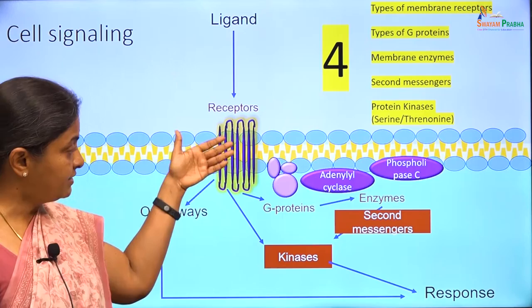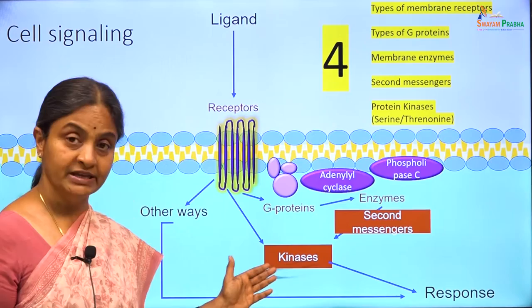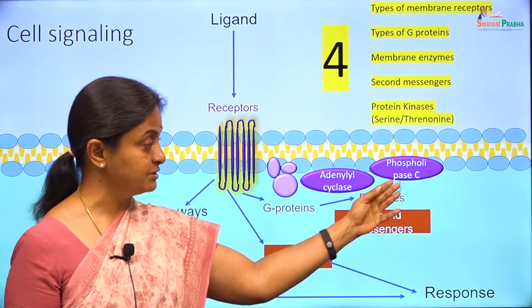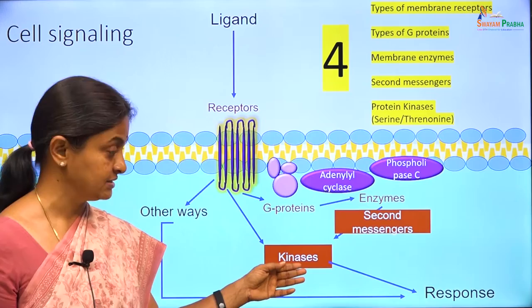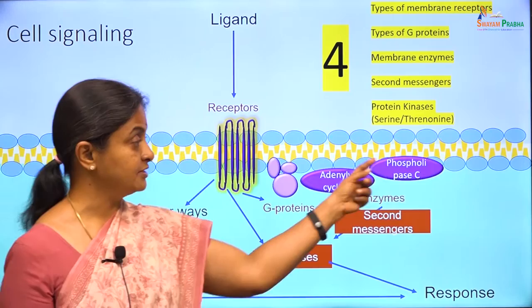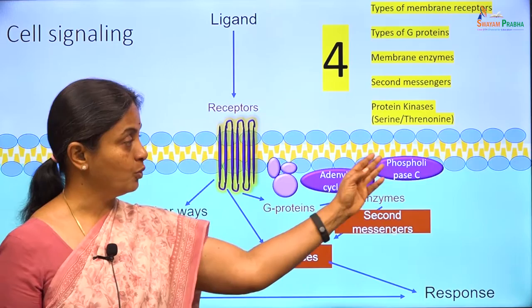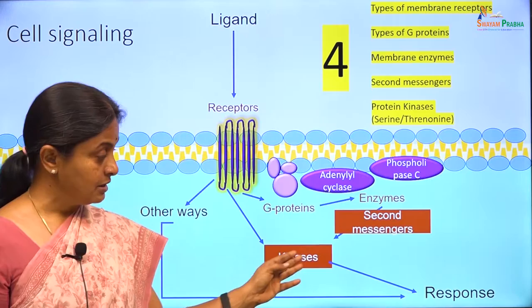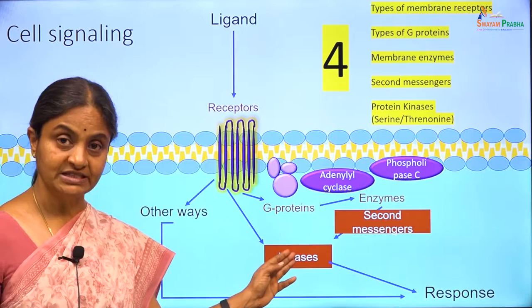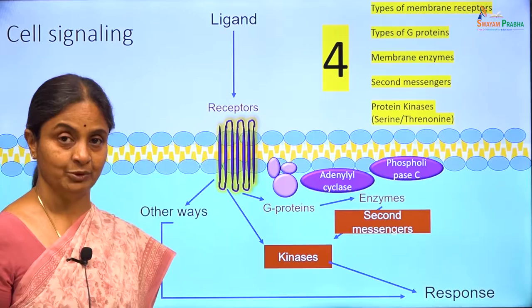A general rule is that when the ligand-receptor combination activates a kinase directly, that kinase is usually a tyrosine kinase. But when it goes through a G-protein coupled mechanism, the kinases activated are serine-threonine kinases. We will see 4 types of serine-threonine kinases activated by this scheme — the second messenger signalling pathways — which form one subset of cell signalling pathways.